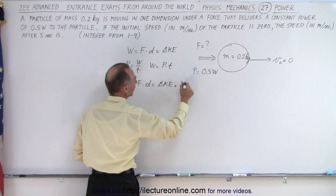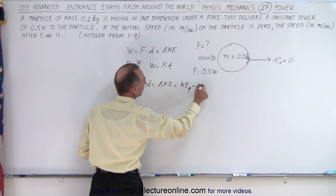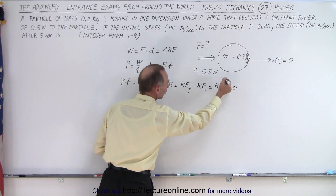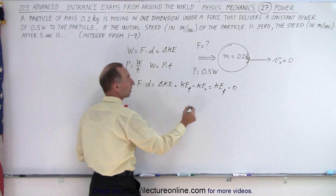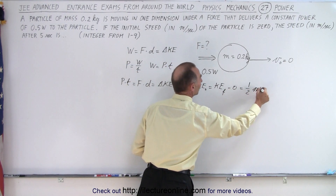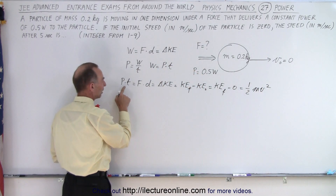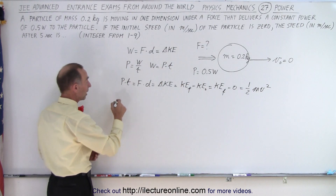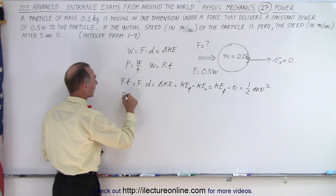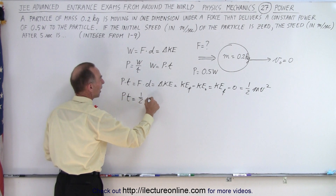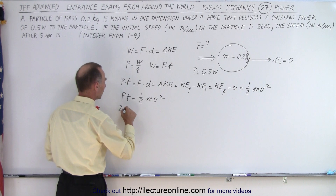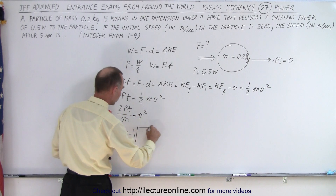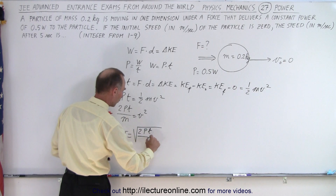That's equal to kinetic energy final minus kinetic energy initial, which equals kinetic energy final minus 0, or simply the kinetic energy obtained — which is equal to one half mv squared. So now we have a relationship between power and kinetic energy, or actually velocity. Power times time is equal to one half mv squared, or 2 times power times time divided by mass equals v squared, or v equals the square root of 2 times power times time over the mass.